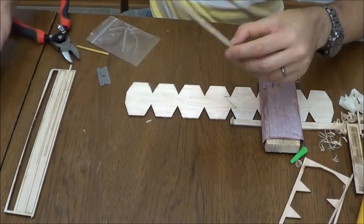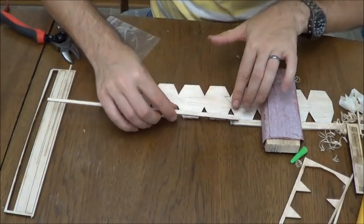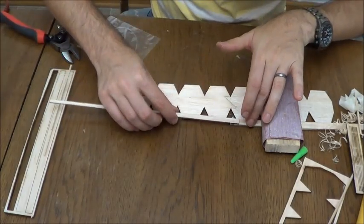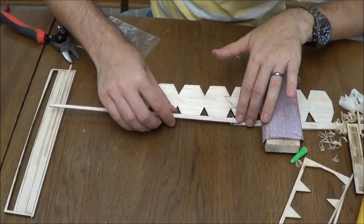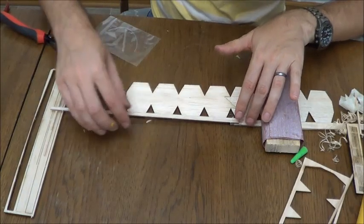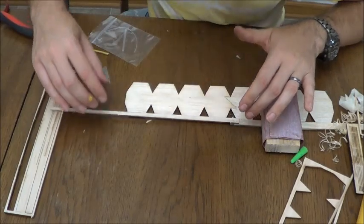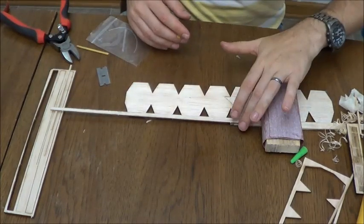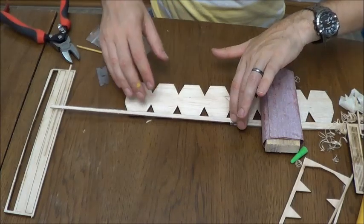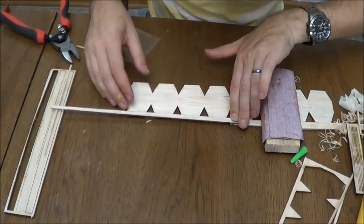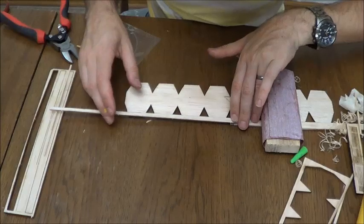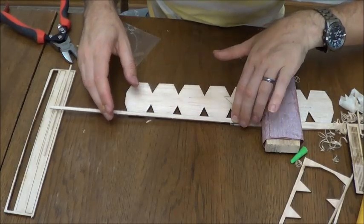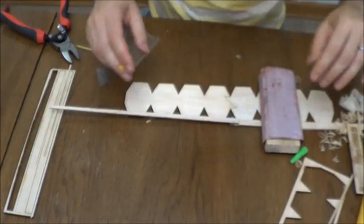And again, remembering the amount of overlap we need here. Half an inch is enough. I'm going to set this in here. And now there you've got your tail boom attached to your motor stick. All done.